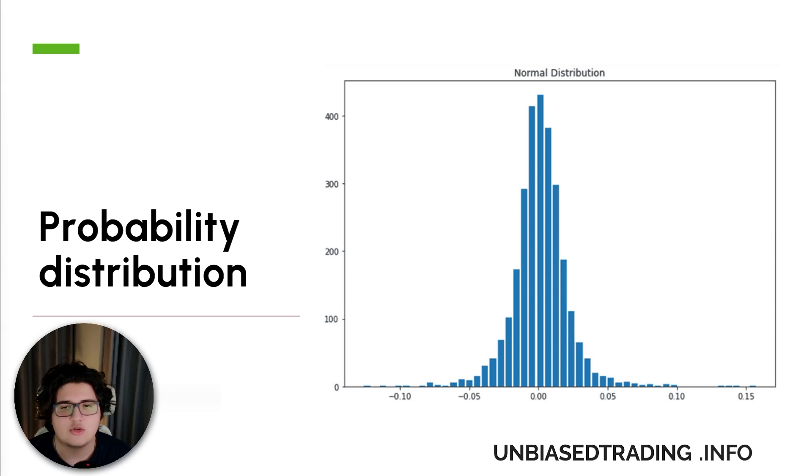While predicting any single day's movement is pretty much impossible, understanding these probabilities is crucial. Maybe there's a 70% chance the price will stay within a certain range, a 20% chance it will go higher, and a 10% chance it will go lower.